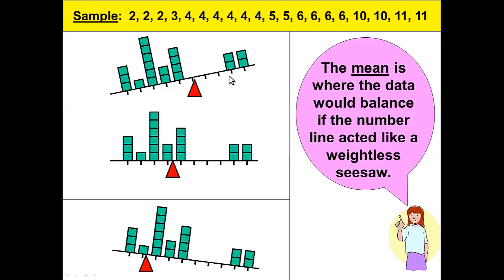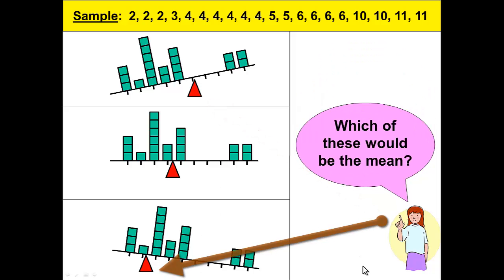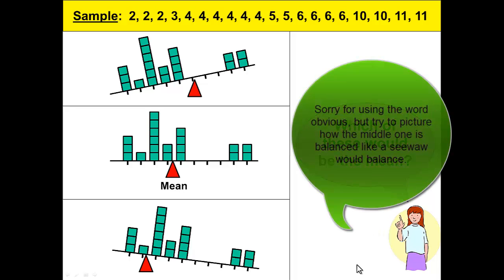Well, we can see that the top one and the bottom one aren't balanced and wouldn't balance if we tried to balance it here or here. Which would be the mean? The center one. It's obvious how the middle picture is close to where it would balance. To find the exact number we will have to do our calculations.